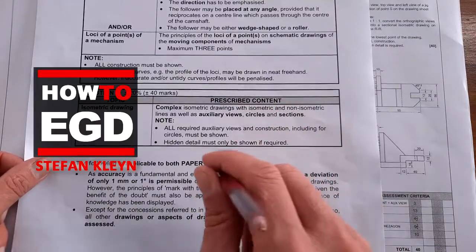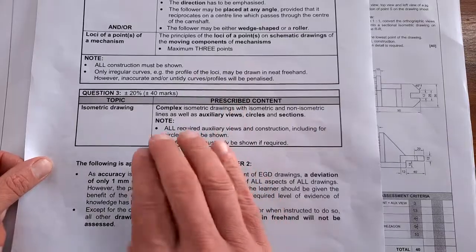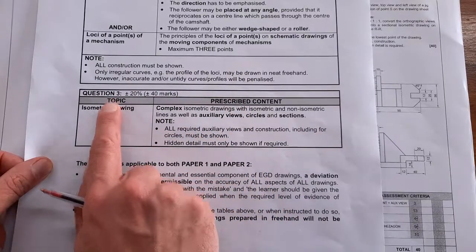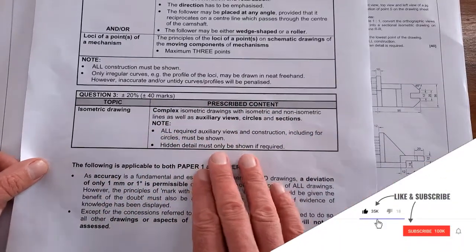Welcome Grade 12s, we are here at How to EGD and we are smashing your final exams. In this video we're discussing Question 3, which is isometric drawings in Paper 2.